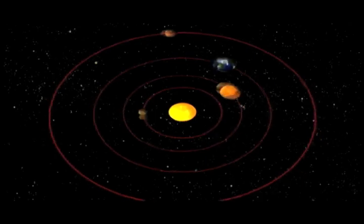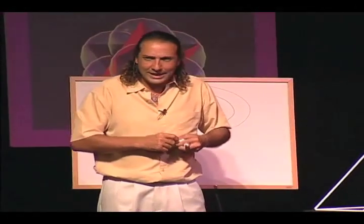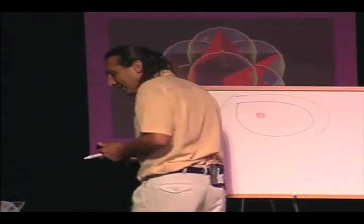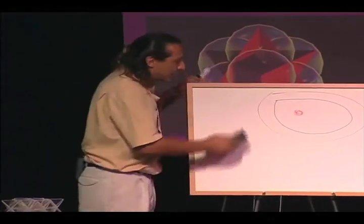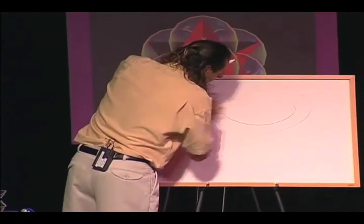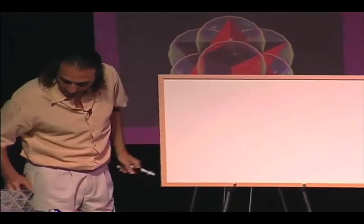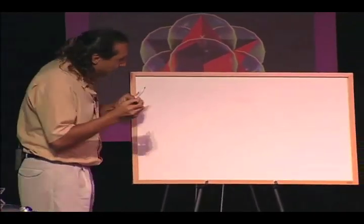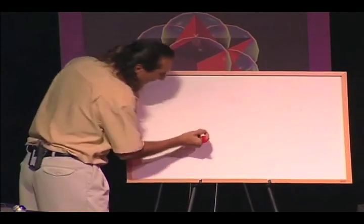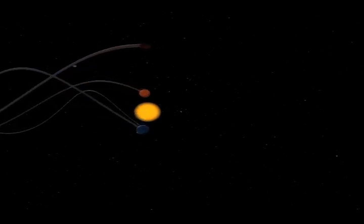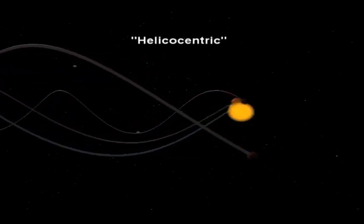Actually, that is absolutely incorrect. Thinking of the solar system this way is equivalent to thinking that the earth is flat. The solar system does not behave that way at all. In fact, it behaves in a completely different way, since the sun is moving through space and the planets are flying around the sun, generating these huge vortices as it follows the equator of the sun.